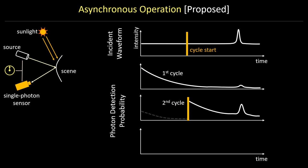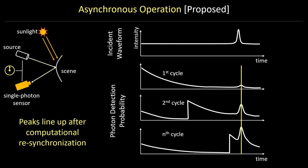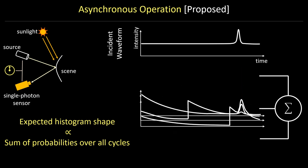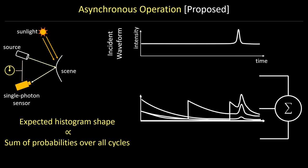In asynchronous operation, we shift the start of the sensor with respect to the laser. This increases the probability of capturing the source photons that arrive later in the cycle. We then align the sensor cycles to the laser period which makes the peaks line up. By summing these measurements over many cycles, we get a histogram like this.